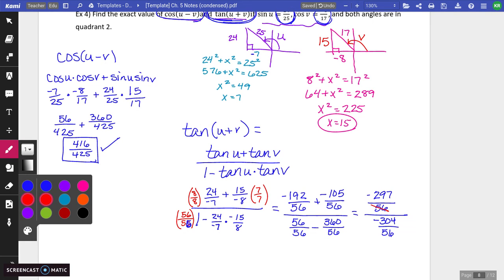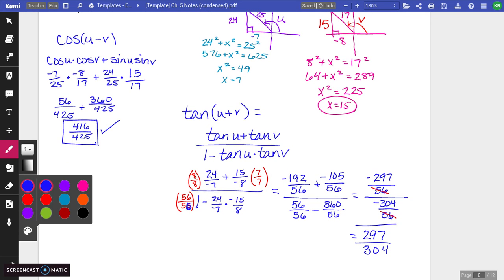297 over 56. And that is a negative 304 over 56, a complex fraction. So we can get rid of those denominators. We have negative divided by negative. So that's going to go positive. And we have 297 and 304. It does not simplify. So it doesn't reduce. And that is your answer.